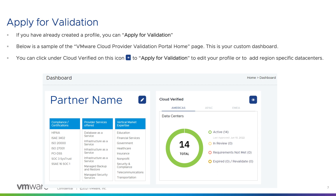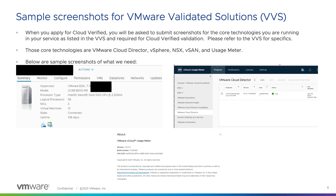This is a screenshot of your personalized dashboard. It will show you which services you have applied for, and if your application is active, in review, or if you possibly have not met all of the requirements. To apply for Cloud Verified, you must submit screenshots from the usage meter of the required core technologies in the VMware Validated Solutions. The core technologies include VMware Cloud Director, vSphere, NSX, vSAN, and Usage Meter. The above screenshots are examples of the vSphere, Cloud Director, and Usage Meter versions that a partner is running.